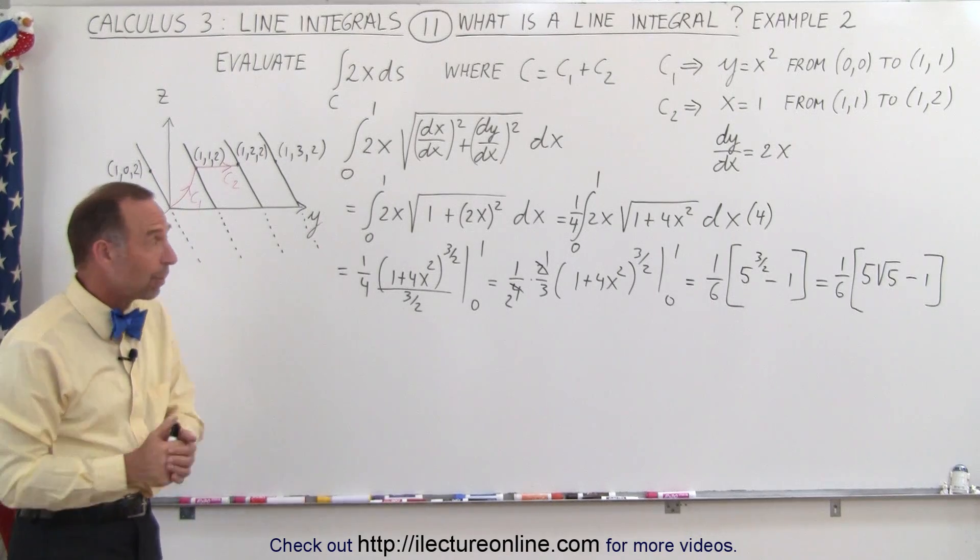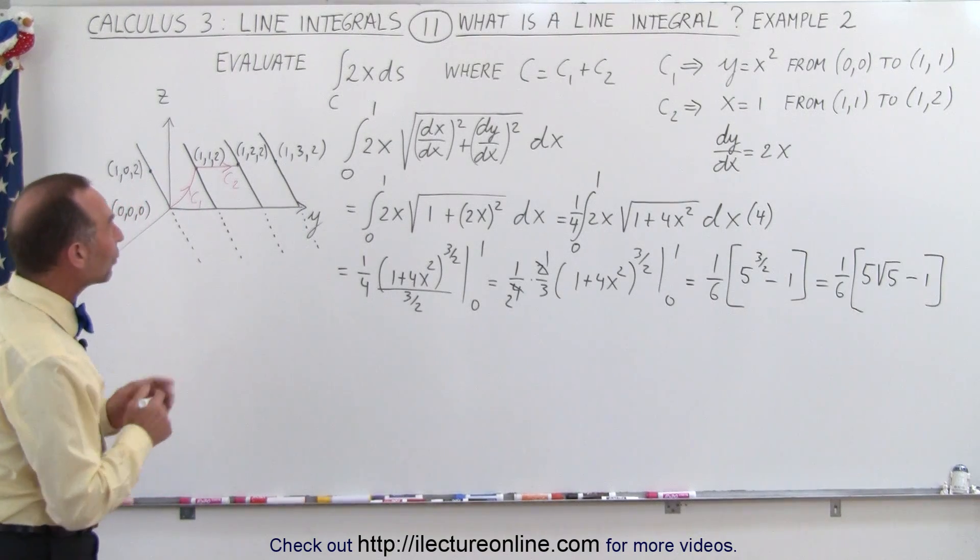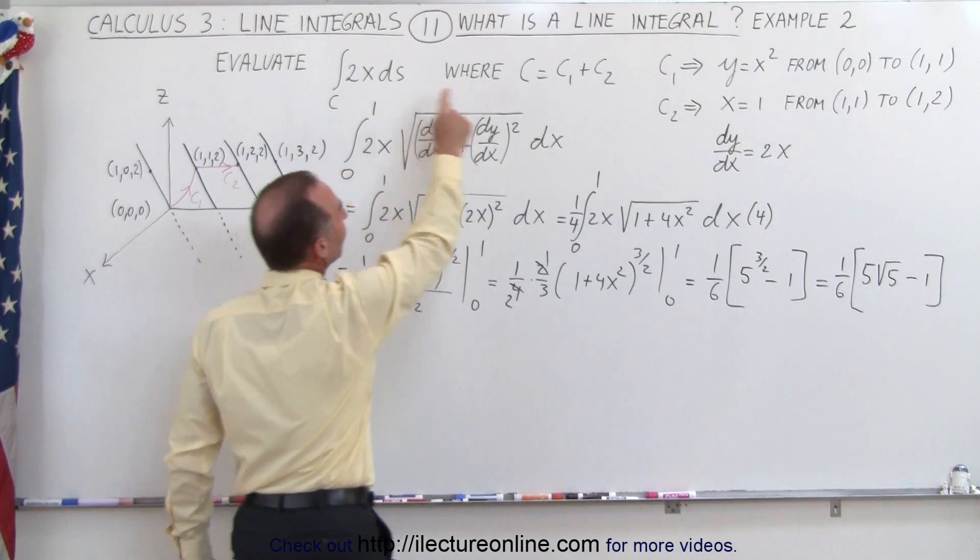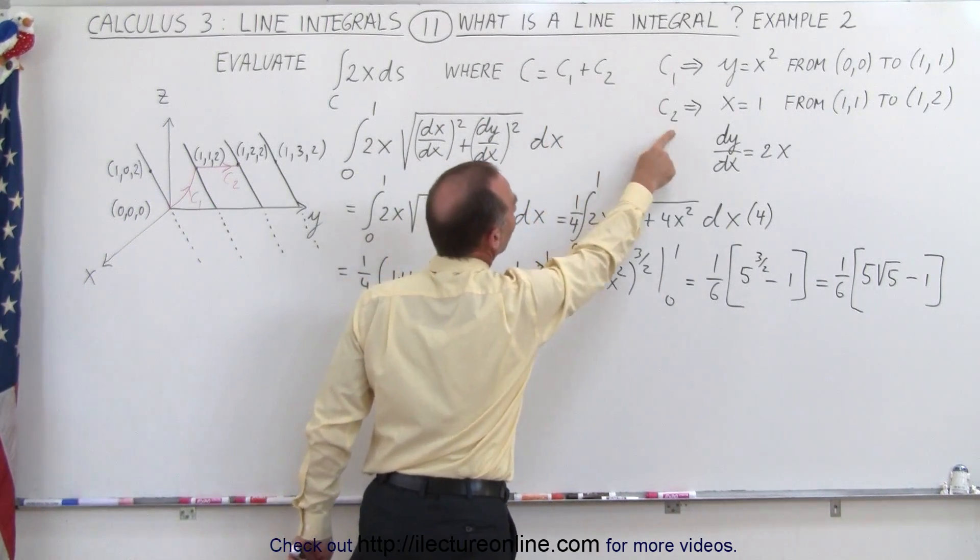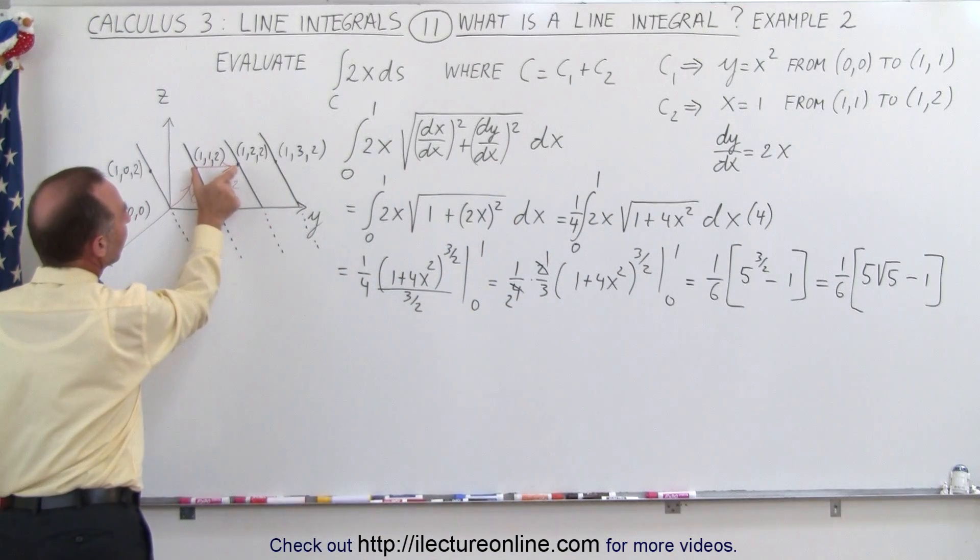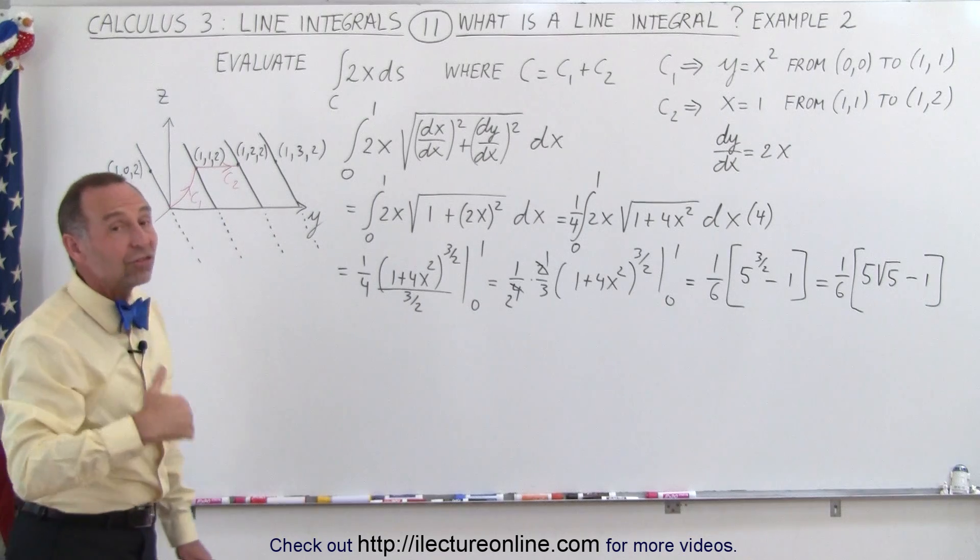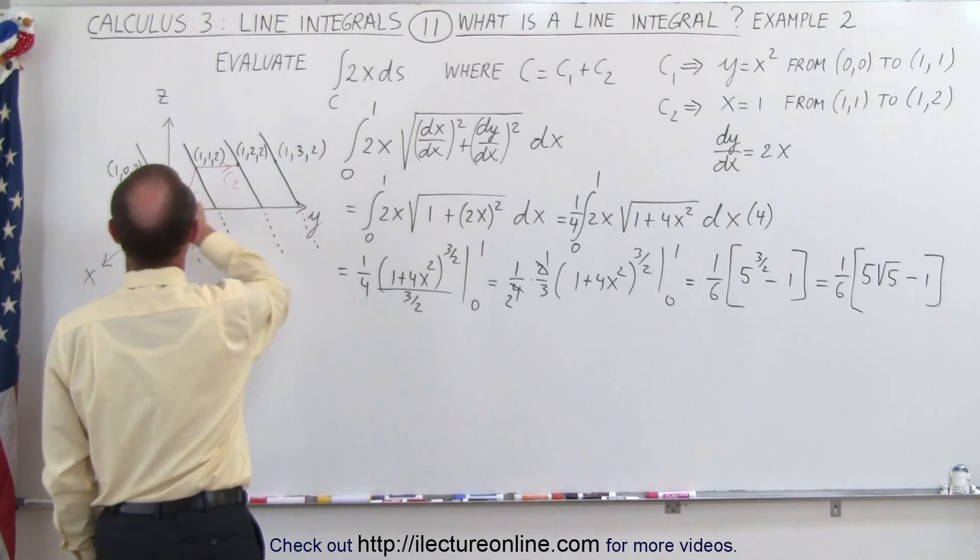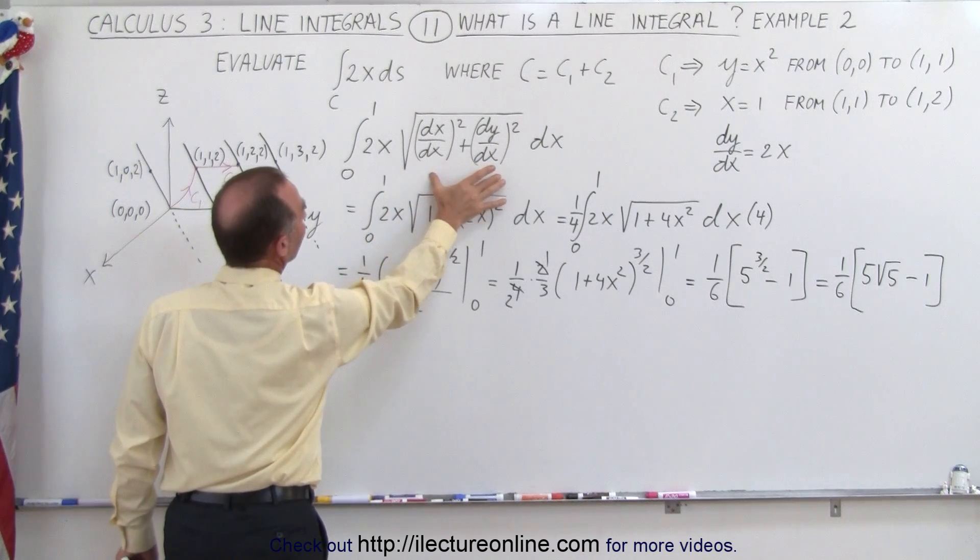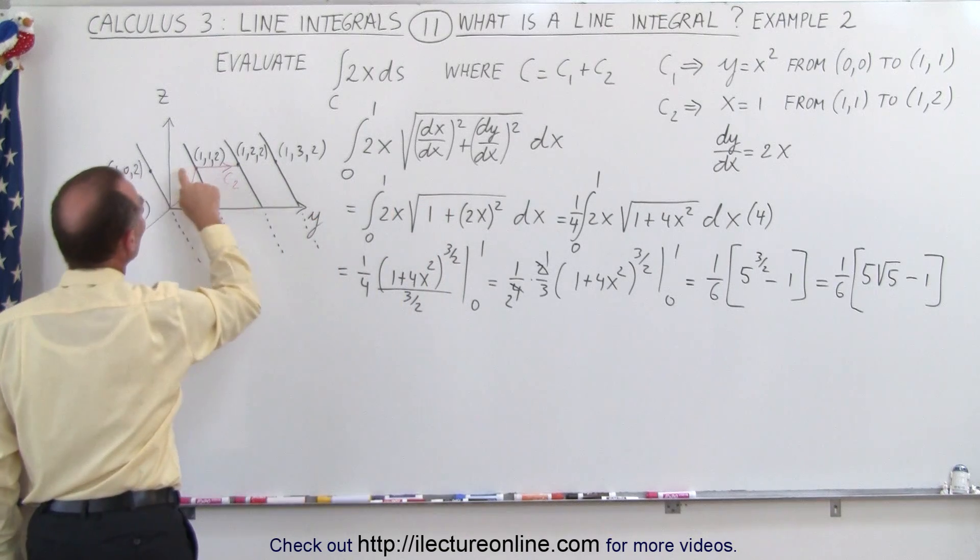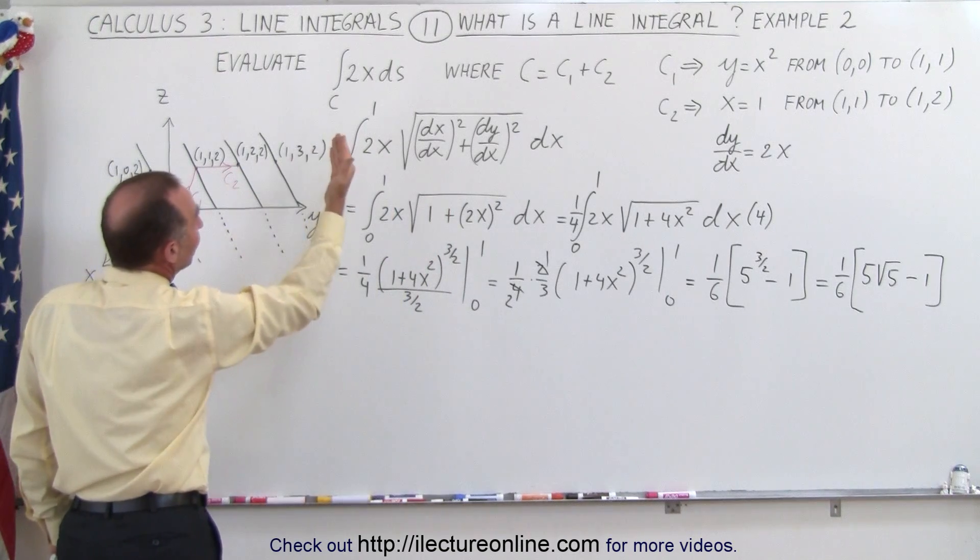Now let's do the second part of the problem. Now we're going to integrate the second part, we're going to do the line integral of the same function, but now with C₂, and C₂ is defined where x is equal to 1, so that's this piece right here. x equal 1 means x does not change, so dx doesn't change, dx is equal to 0, so for our ds, this is our ds here, this goes away, and the only thing that's changing is y, so in essence, we can call ds equal to dy.